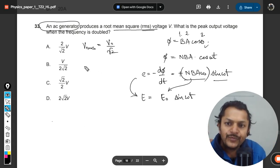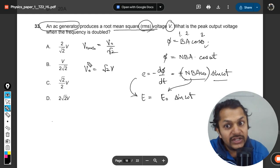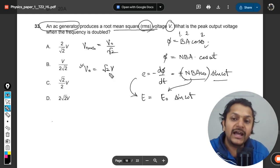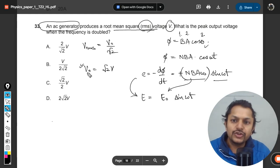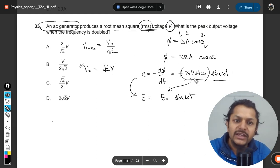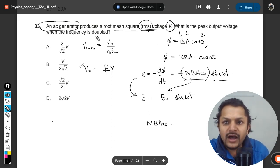So in case number one, initially the peak value is equal to √2 times V because V is the RMS value that is given here. So initially this was the peak value and this is the value that we can find from the given data. Peak value will be referring to NBA ω.